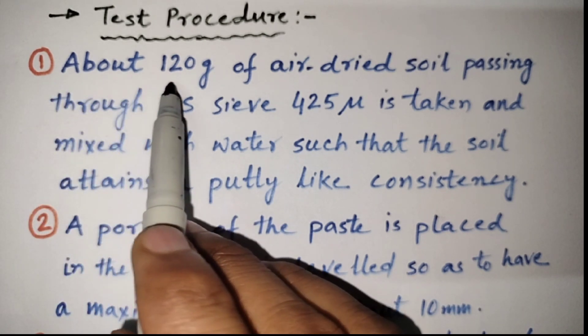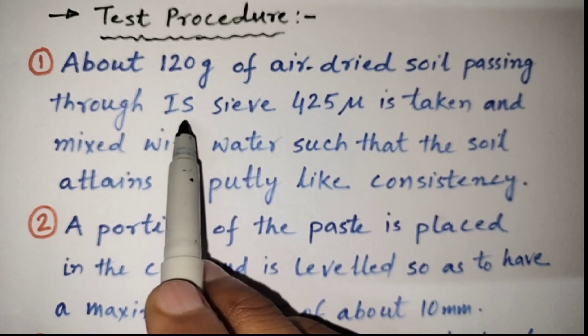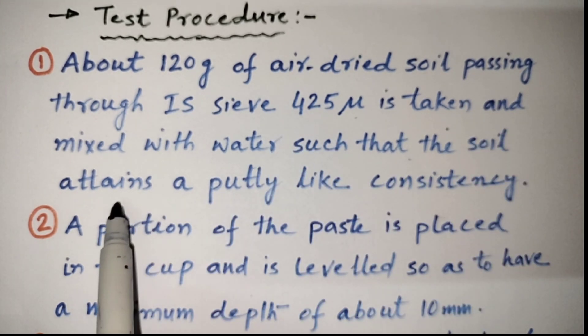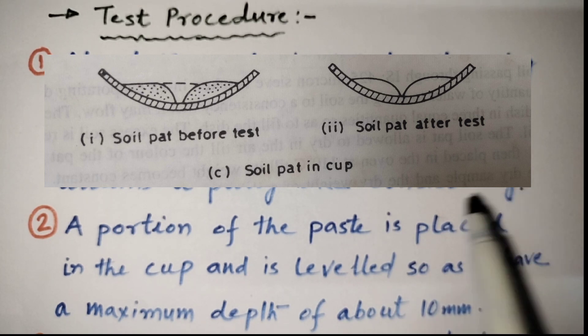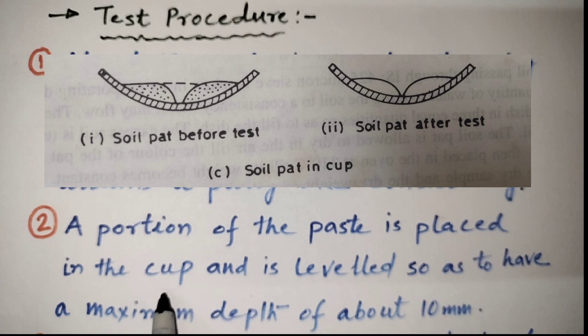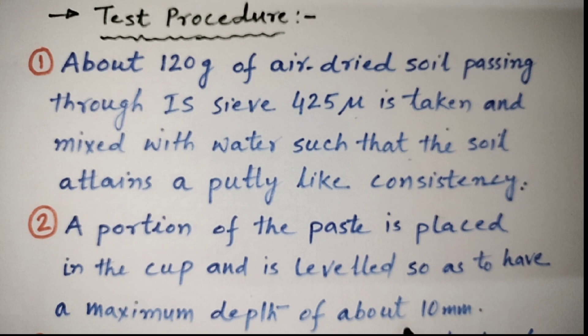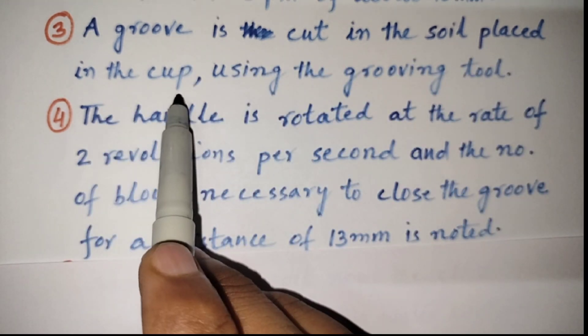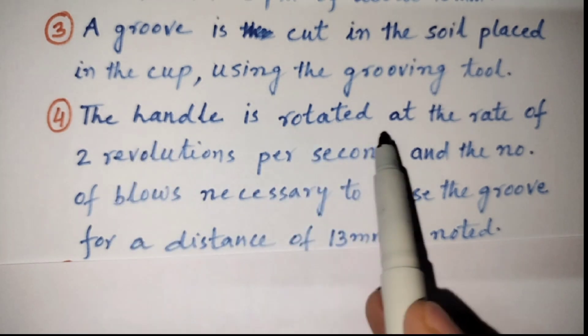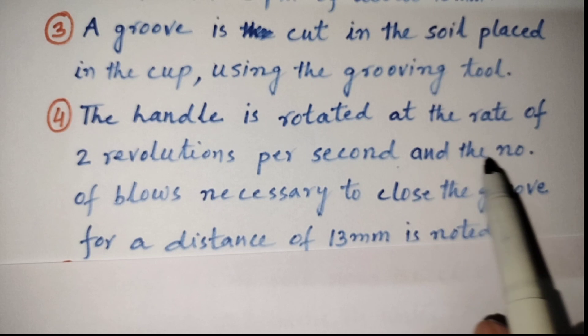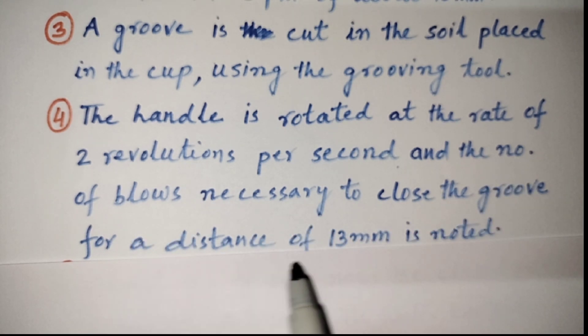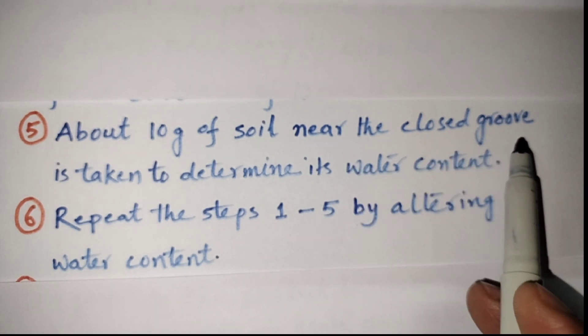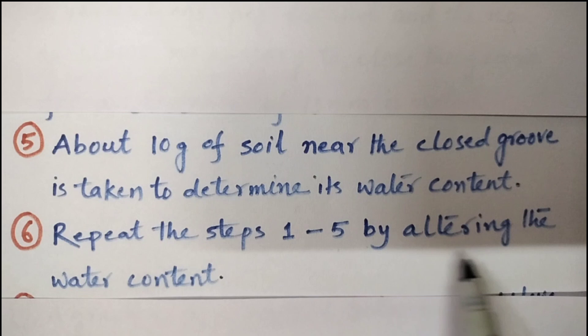Let us discuss the detailed test procedure for determining the liquid limit. Number 1: About 120 gram of air dried soil passing through IS 425 micron is taken and mixed with water such that the soil attains a putty-like consistency. A portion of the paste is placed in the cup and is leveled so as to have maximum depth about 10 mm. Now, a groove is cut in the soil placed in the cup using the grooving tool. The handle is rotated at the rate of 2 revolutions per second and the number of blows necessary to close the groove for a distance of 13 mm is noted. About 10 gram of soil near the closed groove is taken to determine its water content. Repeat the steps 1 to 5 by altering the water content.